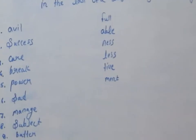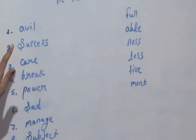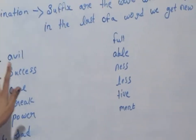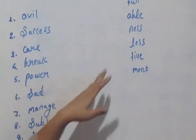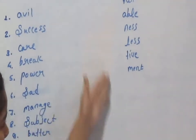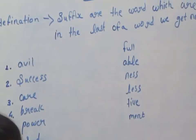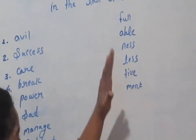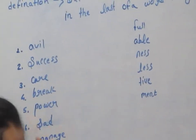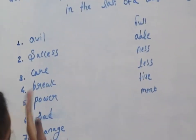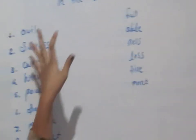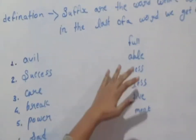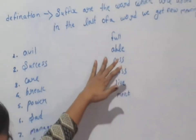So this is the first one: '-able'. You have to see this one, which is the right one. Like '-able' — available.